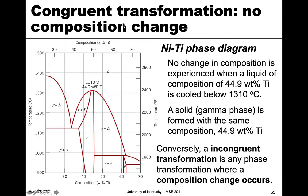Congruent transformation means no compositional change. Here's another example of a congruent transformation in the nickel-titanium system. If we start with a liquid at roughly 50 atomic percent titanium — or 44.9 weight percent — and cool down right at this composition, we go from liquid to a single phase, and therefore the composition stays the same. So this is also an example of a congruent phase transformation, because we keep the same composition.